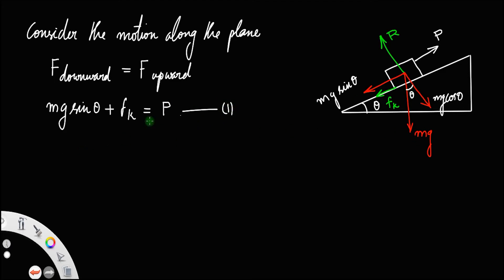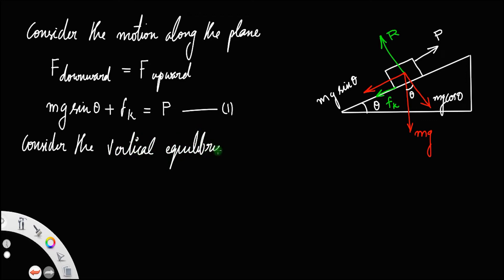Also, consider the vertical equilibrium. We have the net upward force R equal to the net downward force. There is only one downward force perpendicular to the plane: mg cos theta. So R = mg cos theta. Let us call that equation number two.